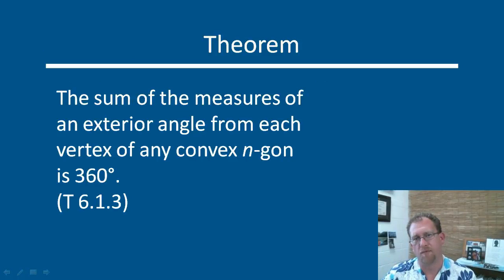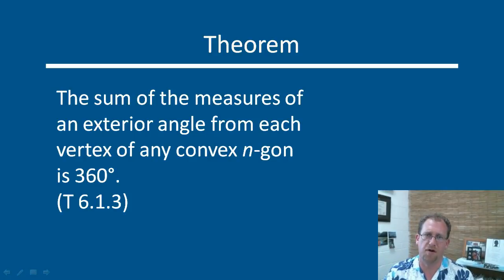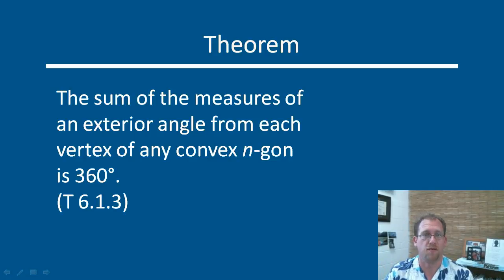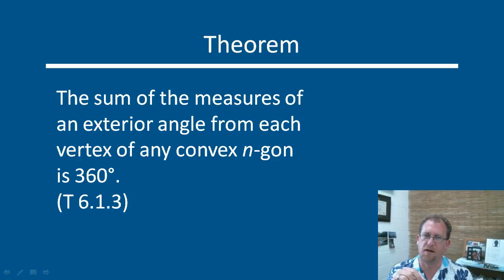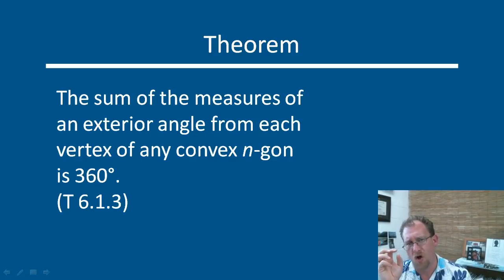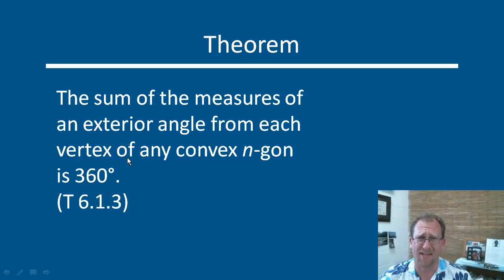Here's something a little weird. We know that the total number of interior angle measures on a polygon changes based on the number of sides — a triangle has 180, a quadrilateral has 360, and so on. But interestingly, if you draw an exterior angle consistently at every vertex of a convex polygon and add them all up, it doesn't matter how many sides the polygon has: the sum of the exterior angles at all vertices always equals 360 degrees. I didn't believe it — I tried it a couple of different times, and it's true.